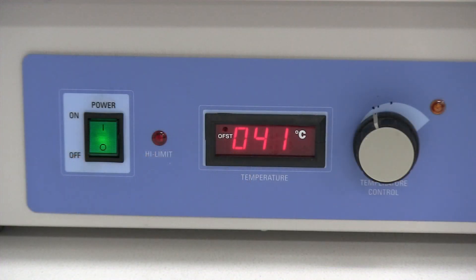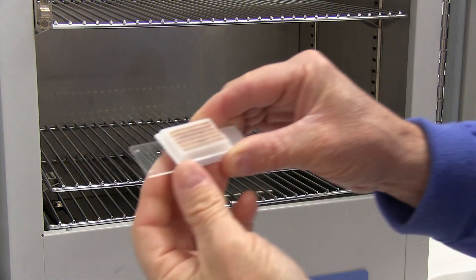I always put my oven at between 41 and 45 degrees Celsius. That will warm up the paraffin but not melt it.